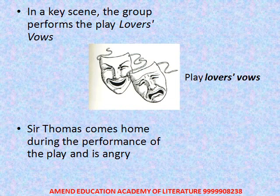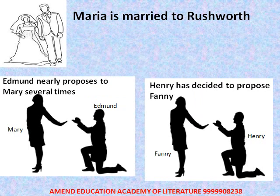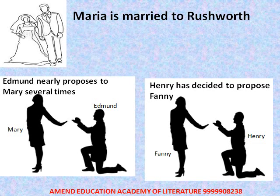Life returns to a normal scenario after the play. Maria is married to Rushworth, since Henry never declared his complete feelings toward her, and she and Julia leave Mansfield Park for London. Edmund nearly proposes to Mary several times, but her disdain and indifference always stops him at the last minute. He confides his feelings to Fanny — that he loves Mary, but she doesn't care for him or respond to his feelings positively.